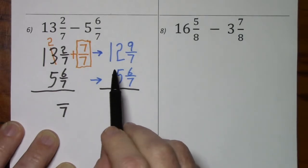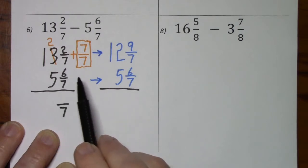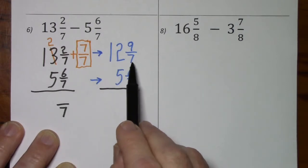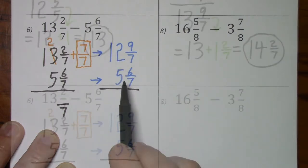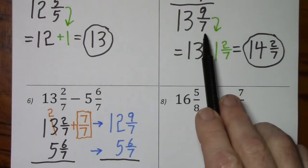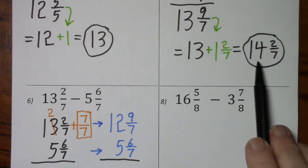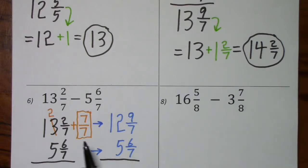Before I go on, I'd like to emphasize 13 and 2 sevenths is the same amount of stuff as 12 and 9 sevenths. This is just written in a different form. Like on a previous problem when we had 13 and 9 sevenths, we had to rewrite it as 14 and 2 sevenths. You can go in either direction.